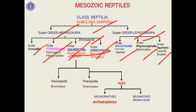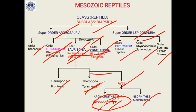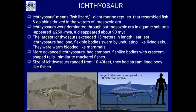Order Saurischia includes reptile-hipped dinosaurs. You have studied examples like Brontosaurus and Tyrannosaurs in the last video, belonging to groups Sauropoda and Theropoda. A small branch from Theropoda evolved into ancient birds — Archaeornithes and Neoornithes. In Archaeornithes we study Archaeopteryx. So we will now cover Pterosauria, Ichthyosauria, and Archaeopteryx. First, Ichthyosauria — ichthyosaurs — meaning fish-lizard, they are giant marine reptiles that resembled fish and dolphins.